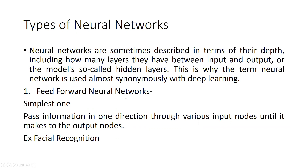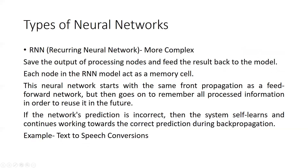The first type is the Feed Forward Neural Network, which is the simplest one. In this network, information passes in one direction through various input nodes until it reaches the output nodes. A common example of its use is facial recognition, and it is generally referred to as FFNN.